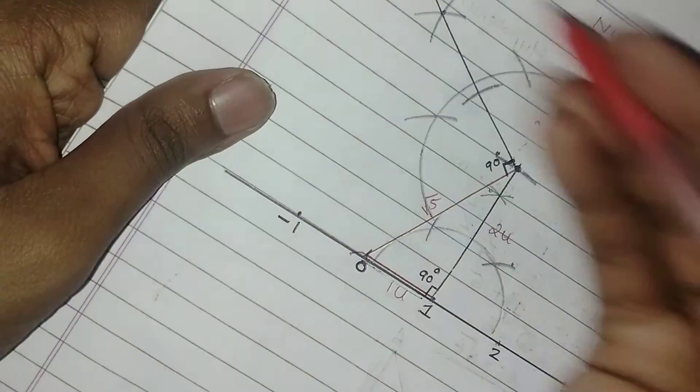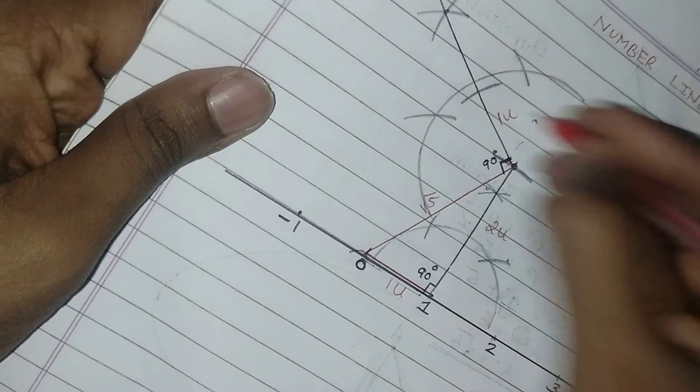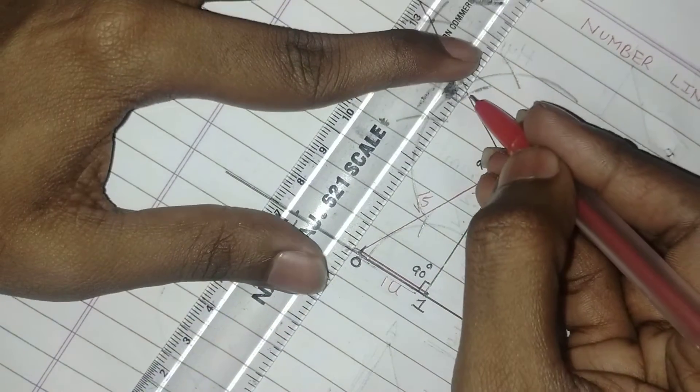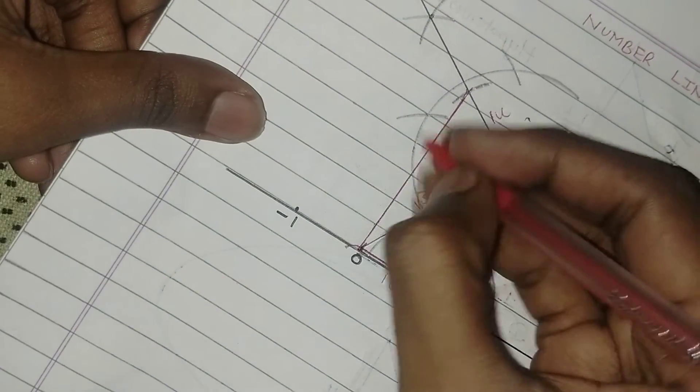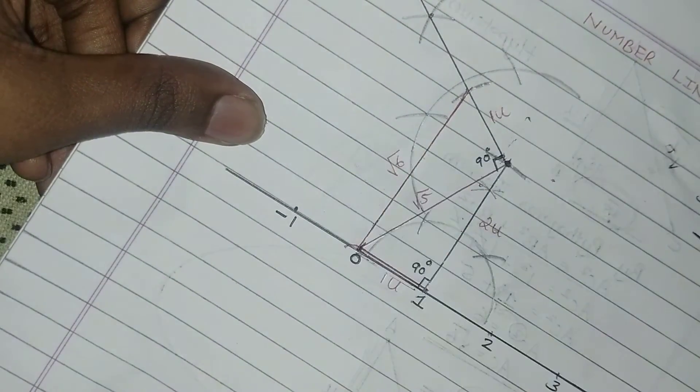So this is my 1 unit. After taking 1 unit, join it. So this is my hypotenuse for the second triangle, where this is my root 6.